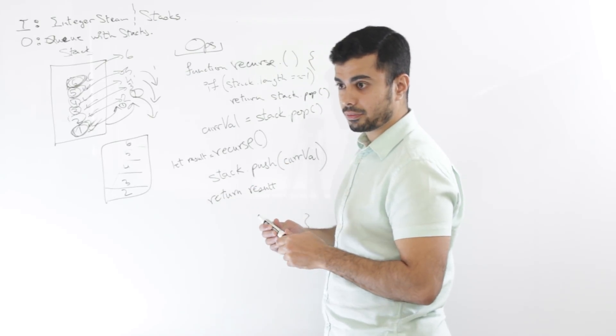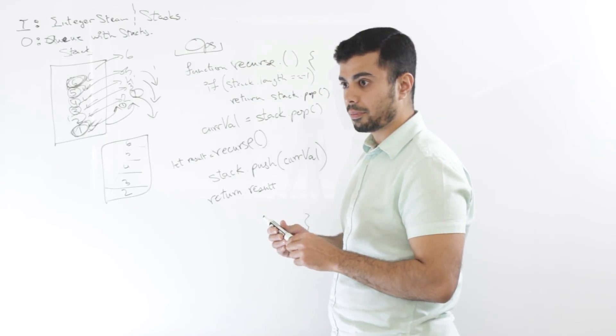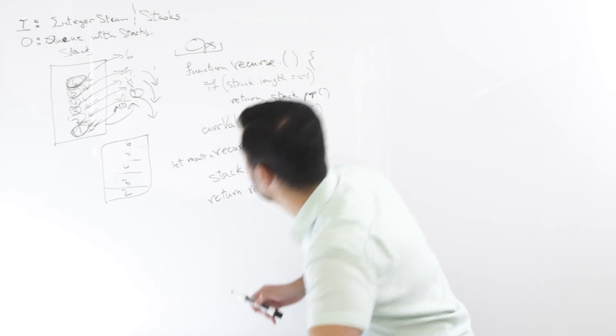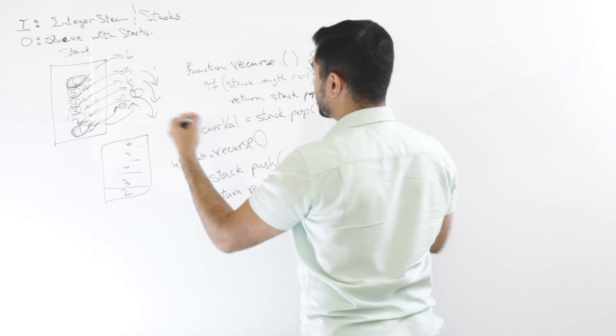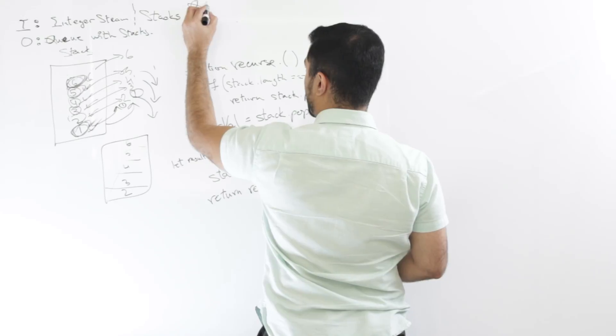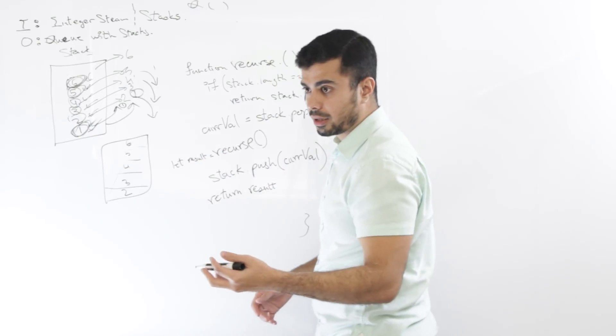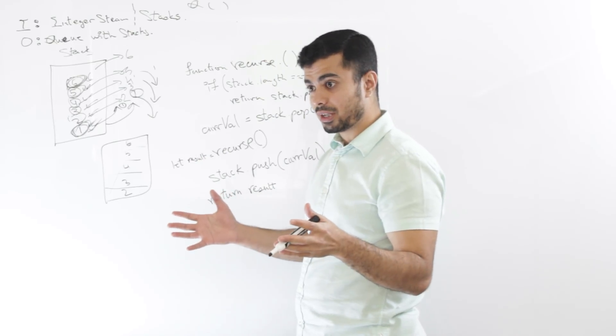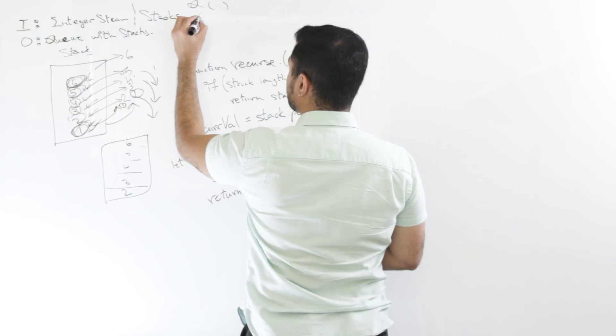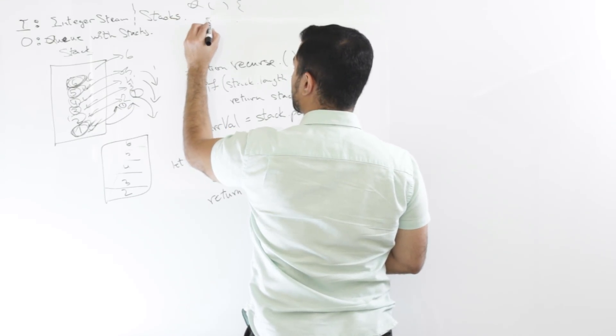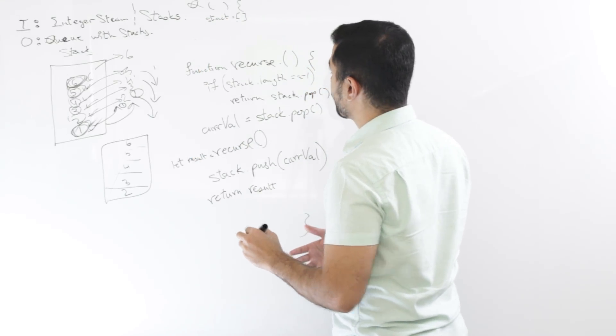So I get this function is dequeuing. Mm-hmm. So can you write the entire queue class for me? Yep. Yeah. So let me erase this. And let's say this is a function inside of the queue class. Mm-hmm. Let's call it queue. And what it has is, let's say it has a stack. Mm-hmm. Now the implementation of a stack optimally would be with a linked list. Mm-hmm. But just for the sake of this, let's say I have an array that mimics a stack. So inside of this, let's say I have stack equals an array. Mm-hmm.